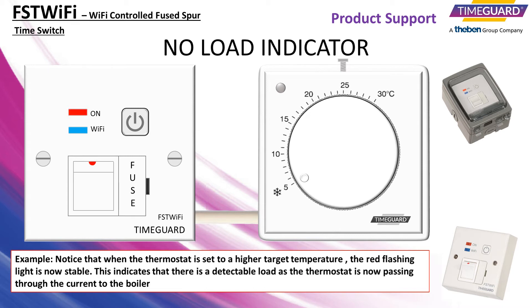Notice that when the thermostat is set to a higher target temperature, the red flashing light is now stable. This indicates that there is a detectable load, as the thermostat is now passing current through to the boiler.